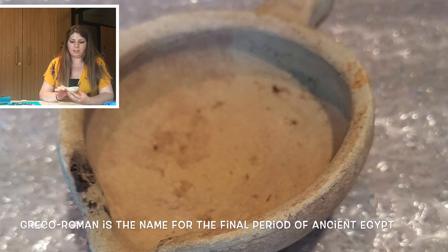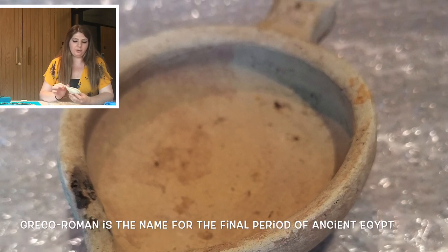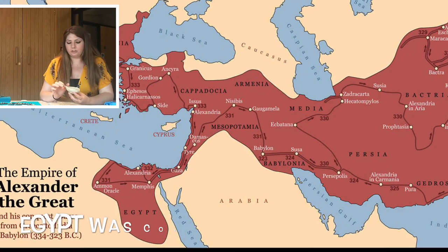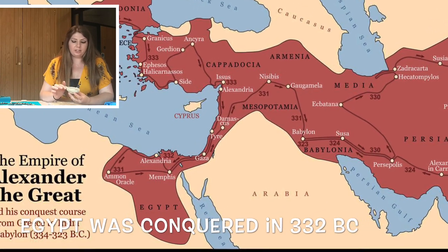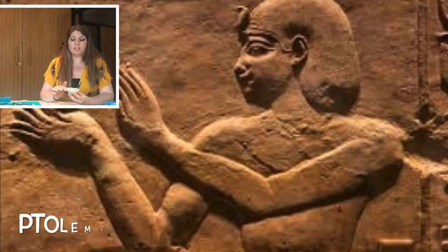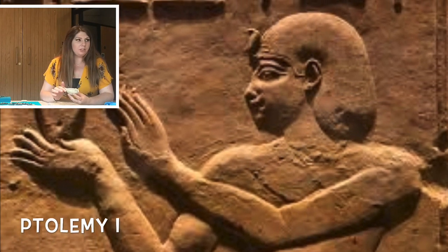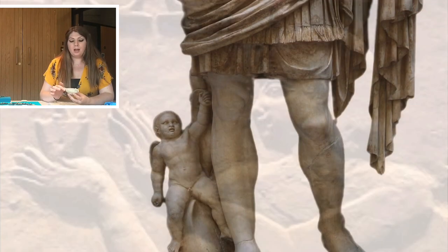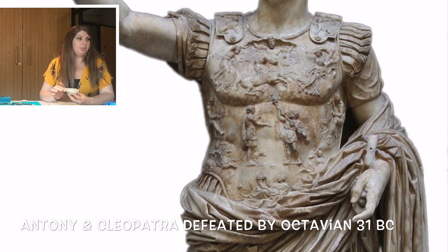What do you mean by Greco-Roman? It's just another name for the final period of ancient Egypt. Alexander the Great conquered Egypt, and after he died his general Ptolemy established his own dynasty. That dynasty spoke Greek as their main language, and then after that Roman rule took over Egypt.